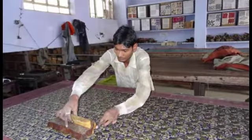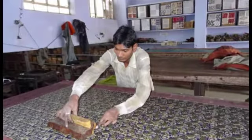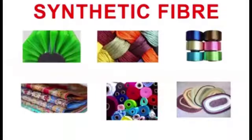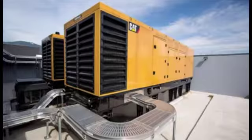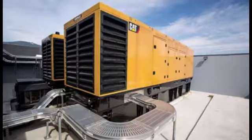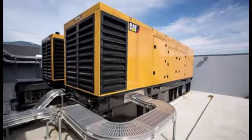People in India are still using traditional techniques, which is slowing down the output potential. Cotton textile industries also face stiff competition from synthetic fiber industry, as man-made fibers are easier and much faster to produce. The textile industry has always been affected by continuous power supply issues — large industries have power backup, but micro-industries lack regular power supply.